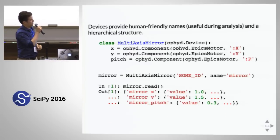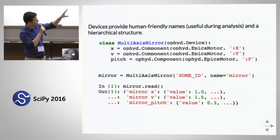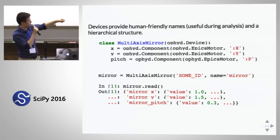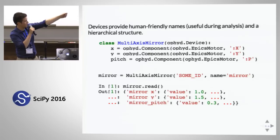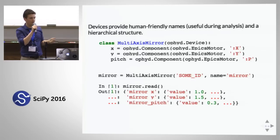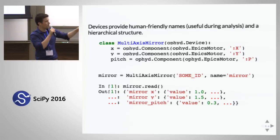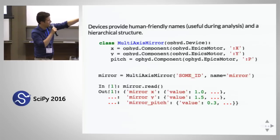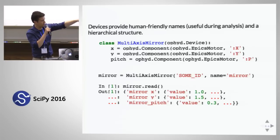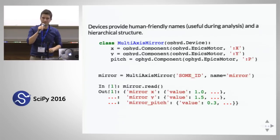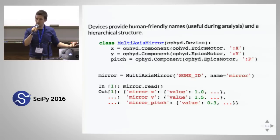Devices are hierarchical and add human-significant names. Here's a multi-axis mirror — it's a device with three motors called X, Y, and Z. If you've written with traitlets or SQLAlchemy, this pattern will be familiar: we can see those names X, Y, Z, or X, Y, and Pitch, and they show up when we read the mirror object. All readings are hierarchically sorted into dictionaries with nice, meaningful names. This is how we talk to hardware.